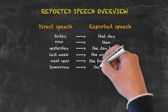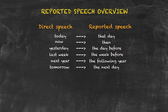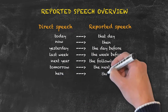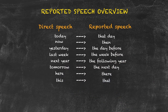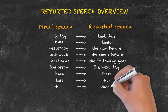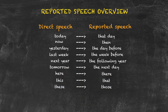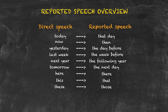'Tomorrow' becomes 'the next day.' 'Here' changes to 'there.' 'This' changes to 'that' — for example, 'this week' becomes 'that week,' 'this year' becomes 'that year.' And 'these' changes to 'those.' The usage of reported speech is, as its name suggests, to report what somebody else has said. The main challenges are back-shifting these tenses and changing the time and place words.